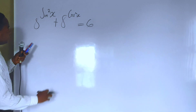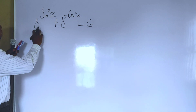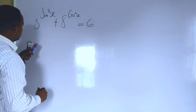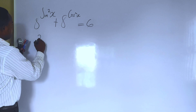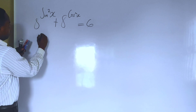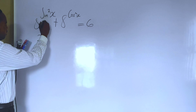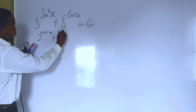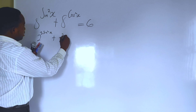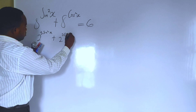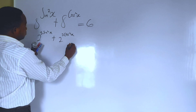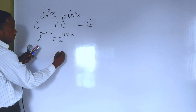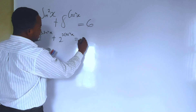I will begin by writing 8 in this form. So we have 2, this becomes 2 raised to the power 3, and we have sin squared of x. And this becomes 2 raised to the power 3 multiplied by cos squared of x. When we take the product, the powers combine. And this equals 6.